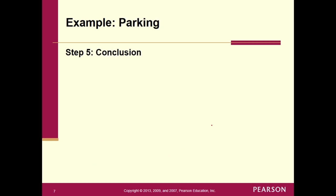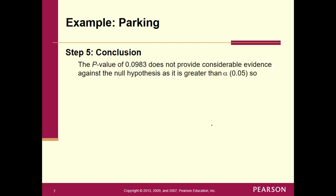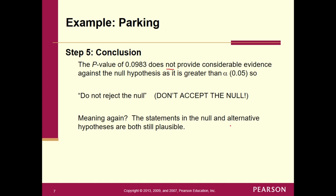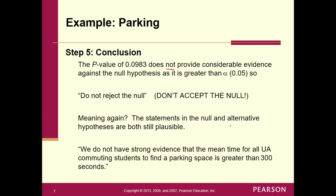All right. So our conclusion. What do we always compare the p-value to? We always compare it to alpha. Alpha was set to .05. So let's see the p-value of .0983 does not provide considerable evidence. Since it's greater than alpha .05. So what are we going to say? We're going to say do not reject the null. Remember, don't say accept the null. We're not accepting the null. It's a possibility. What's also a possibility? The alternative. And we don't know which one it is. So the statements in the null and alternative hypotheses are still plausible. They're still possible. We just don't know which one it is.